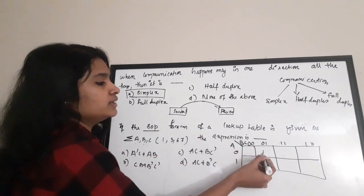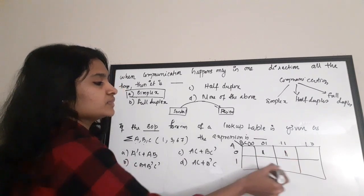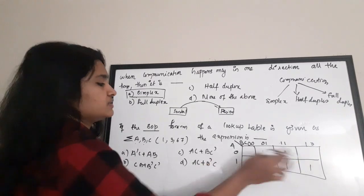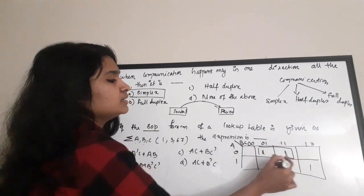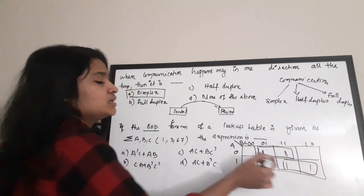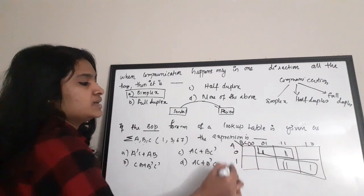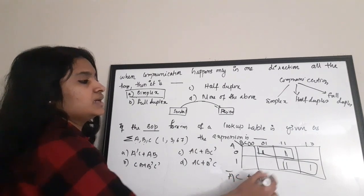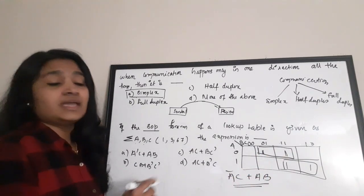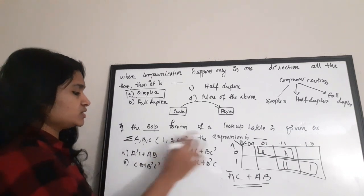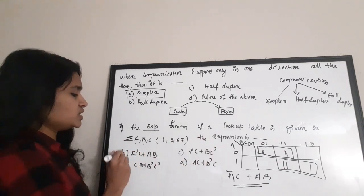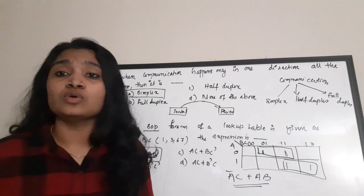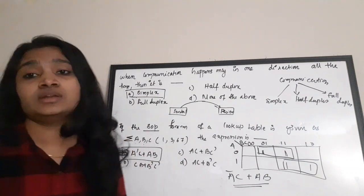Marking positions 1, 3, 6, 7 on the K-map, we can pair these two ones and those two ones into two groups. The expression for the first pair is ā·c (a-bar AND c), and for the second pair it is a·b. So the full expression is ā·c + a·b. The correct option is A: ā·c + a·b.